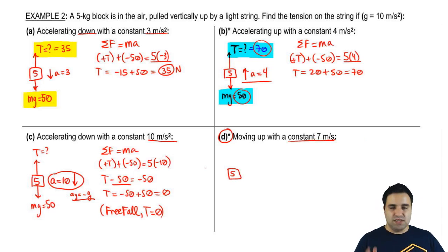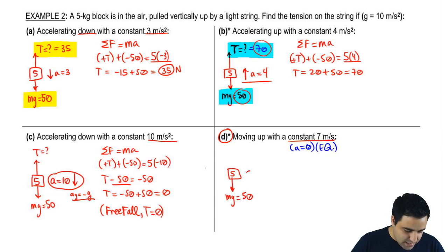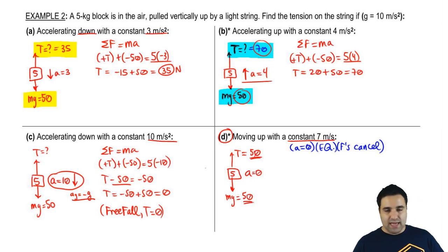One thing to remember, as soon as you see constant velocity, you should be thinking acceleration equals 0, which for forces, this means that the object is in equilibrium. So I have an mg pulling down 50. Acceleration is actually 0. Acceleration equals 0 means equilibrium. It also means that the forces cancel. They cancel exactly.